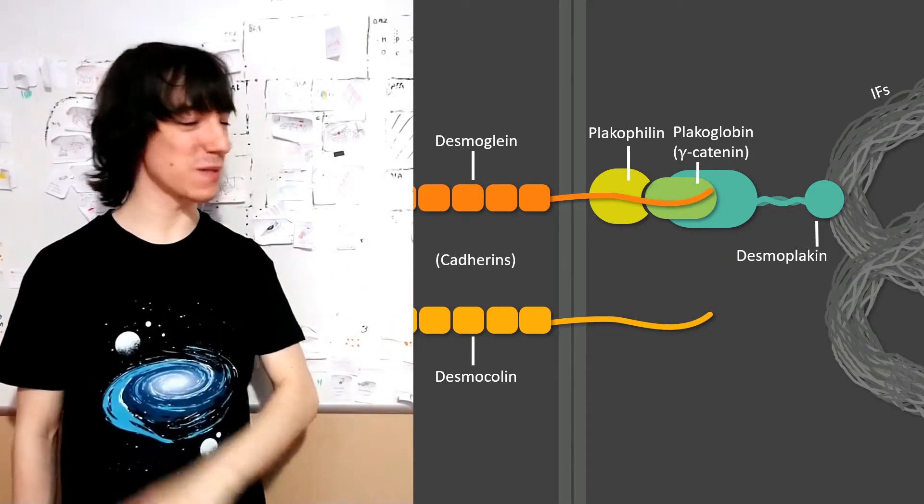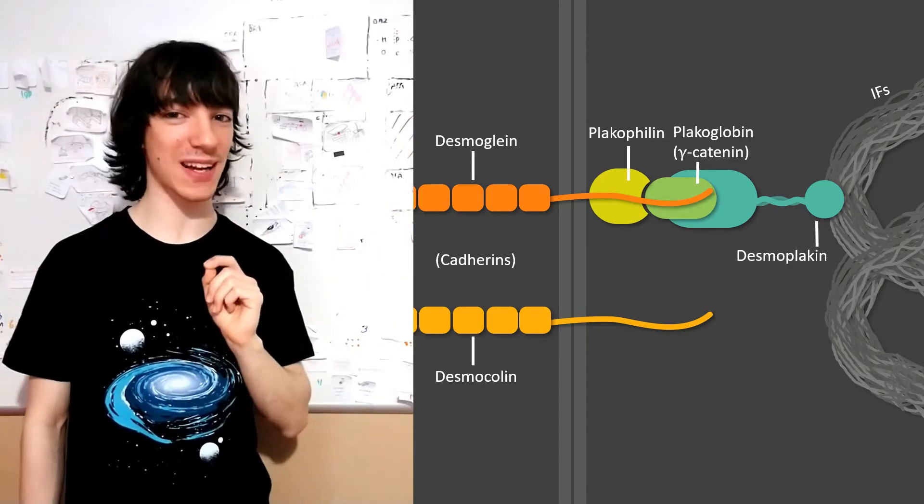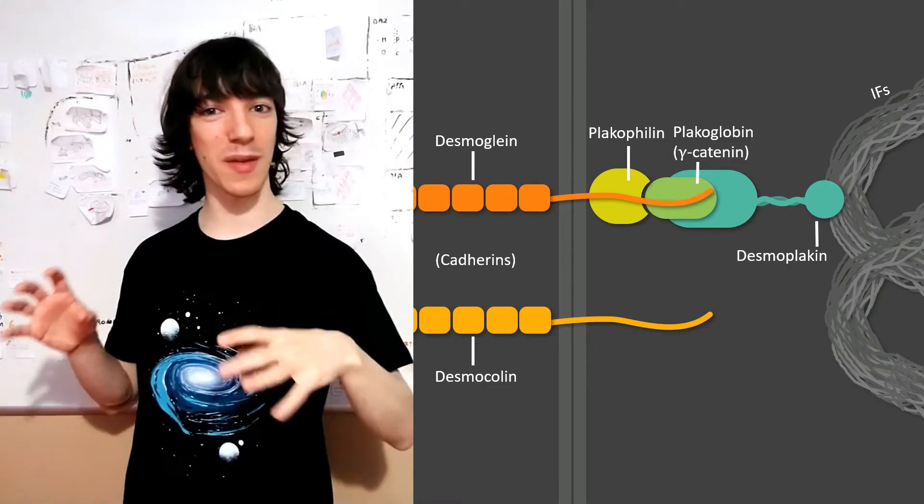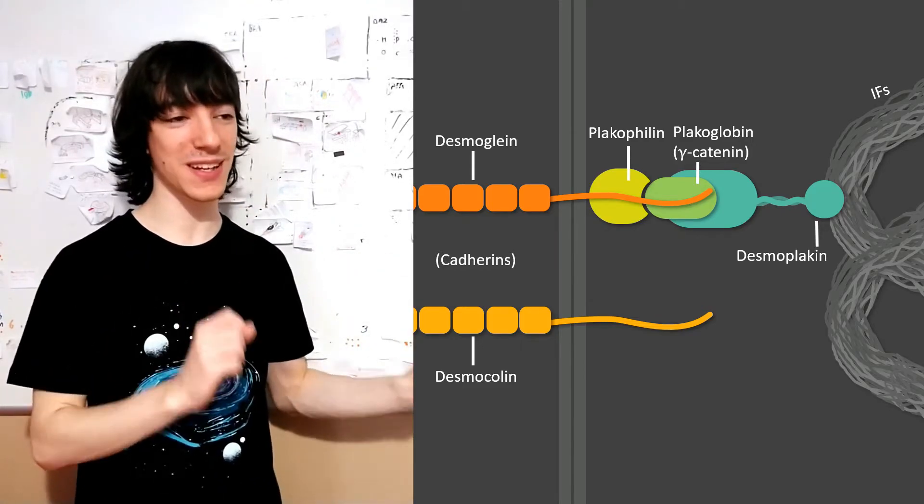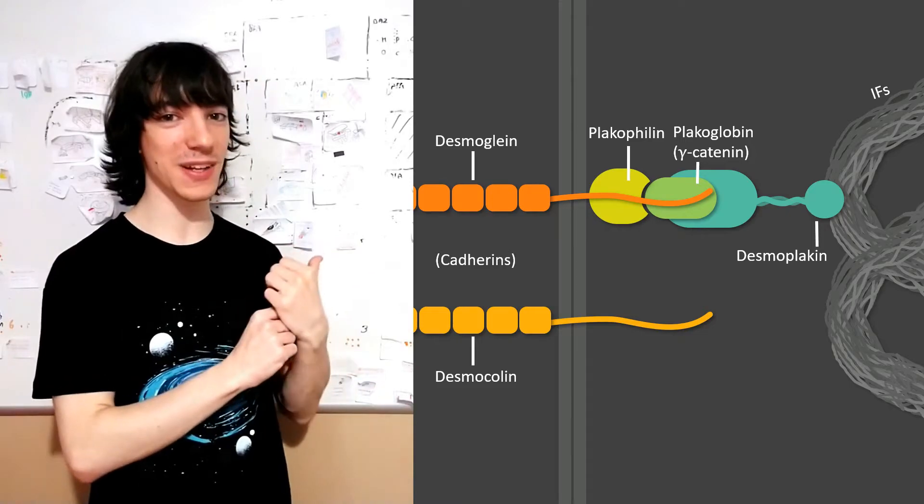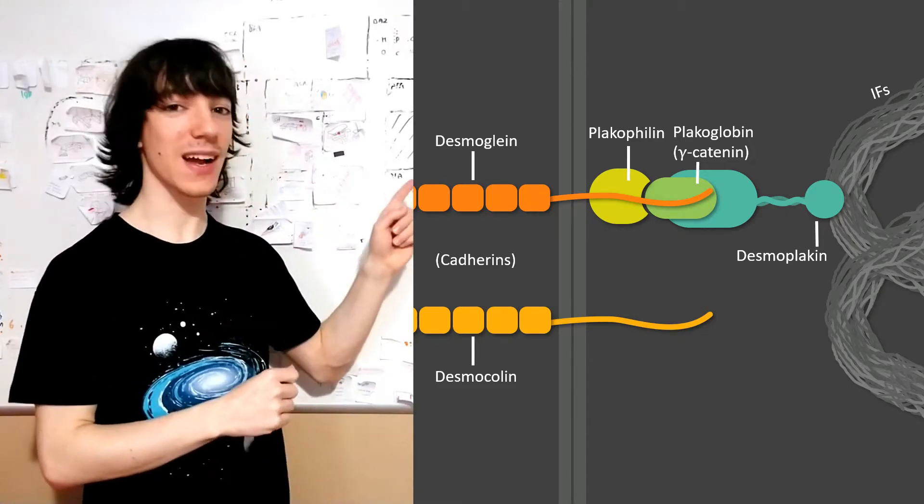Also, one last detail, plakoglobin is also called gamma catenin. Do you remember catenins from when we talked about them in adherent junctions? They were one of the adapters for their cadherins. We see the same with the cadherins in desmosomes. They need catenins.